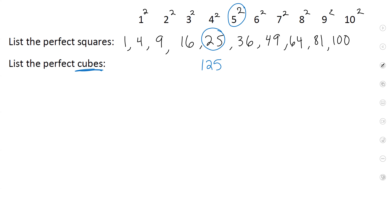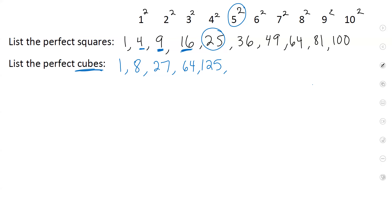Let's compile a list of perfect cubes by multiplying each number by itself three times: 1, 2×2×2=8, 3×3×3=27, 4×4×4=64, 5×5×5=125, 6×6×6=216, 7×7×7=343, 8×8×8=512, 9×9×9=729, 10×10×10=1000.